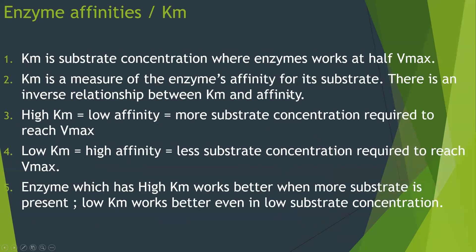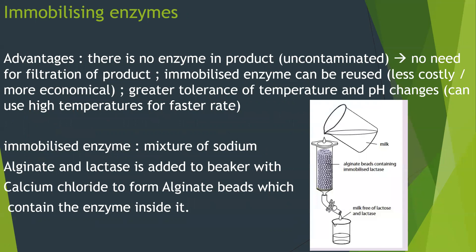Km is the substrate concentration at which the enzyme works at half Vmax. It is a measure of the enzyme's affinity for its substrate, with an inverse relationship between Km and affinity. High Km means low affinity — more substrate concentration is required to reach Vmax. Low Km means high affinity — less substrate concentration is required. A high-Km enzyme works better at large substrate concentrations, while a low-Km enzyme works well even at low substrate concentrations.